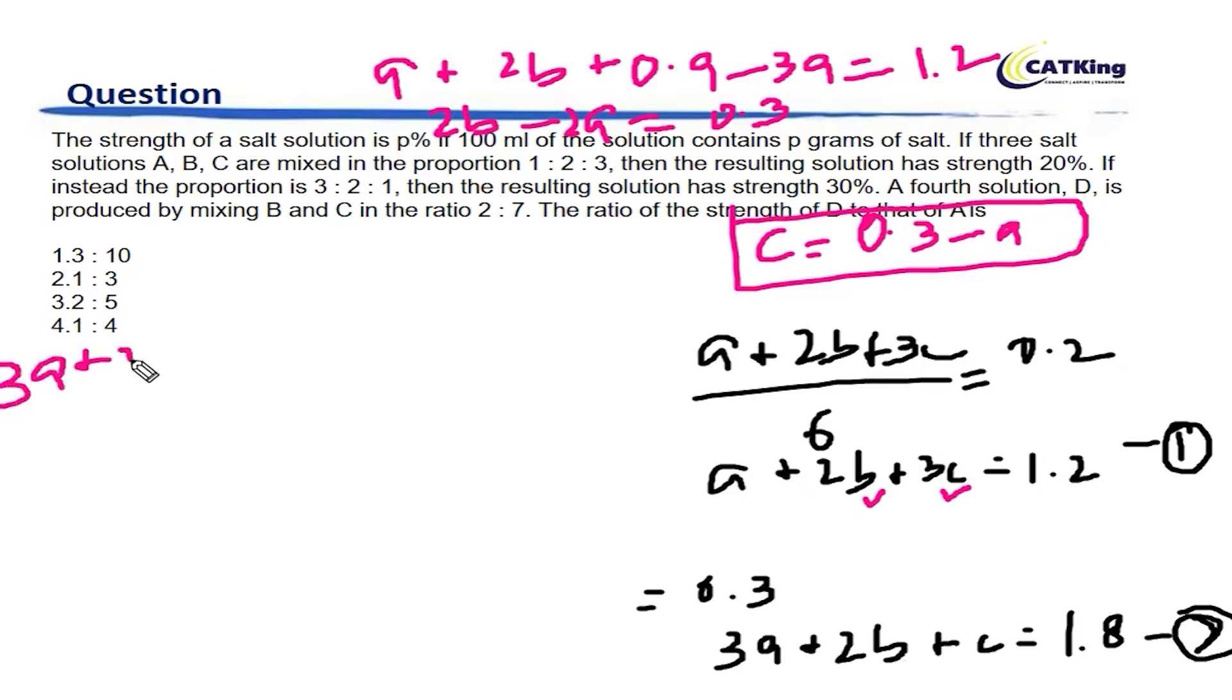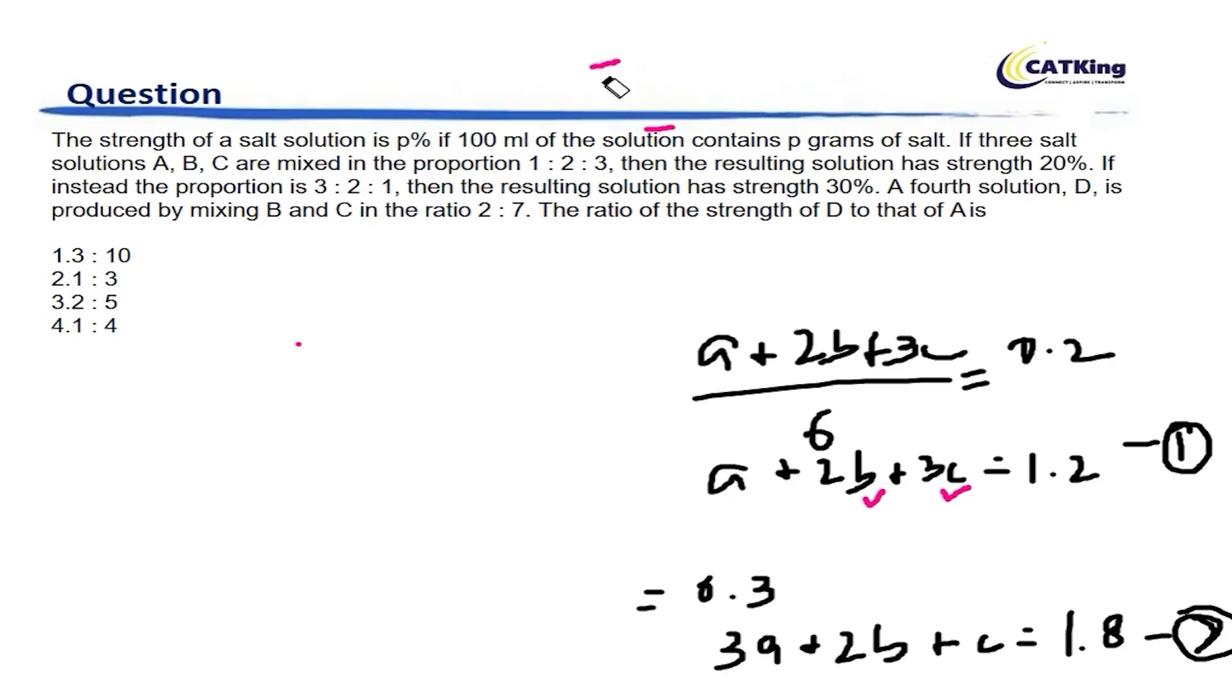So after we have found C is equal to 0.3 minus A, let's put it here. Then this becomes 3A plus 2B plus C is 0.3 minus A. We had done 2A minus 2C is equal to 0.6. So that's the mistake. If you actually subtract it, here becomes 2A minus 2C is equal to 0.6. Therefore, A becomes C plus 0.3.